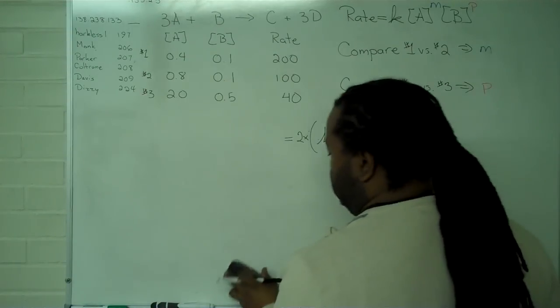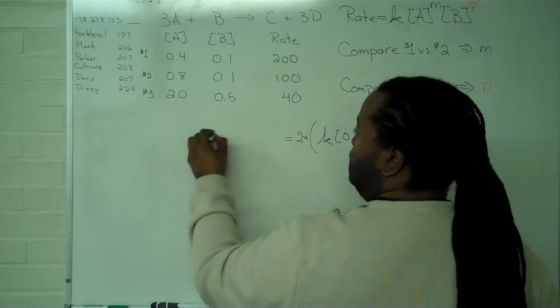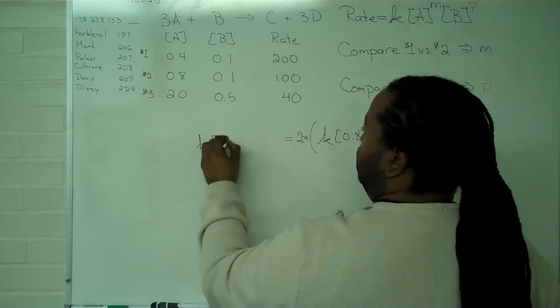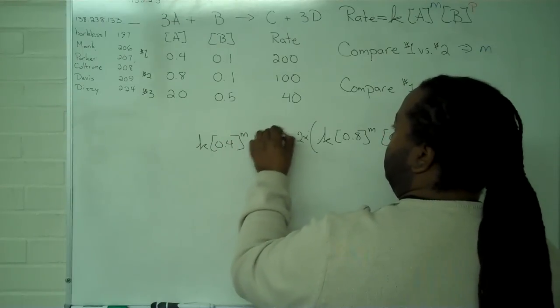Now, we want to write in the same thing for rate one, where we have the rate constant times 0.4 to the M, and 0.1 to the P.